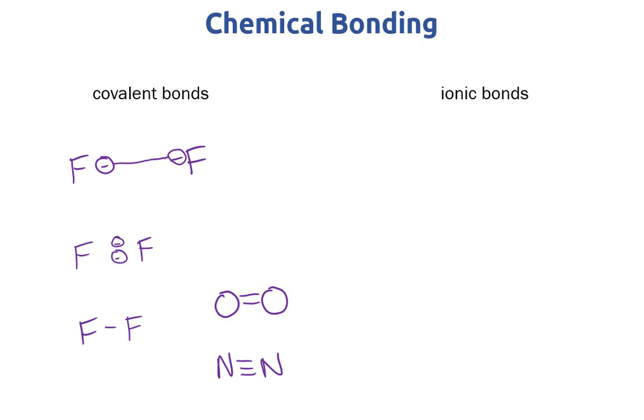So a positively charged ion is called a cation. That could be for example something like sodium plus. This has lost one electron from neutral sodium to have a charge. And a negatively charged ion is called an anion. For example, Cl- is an atom that has gained an electron, so now it has a negative charge.